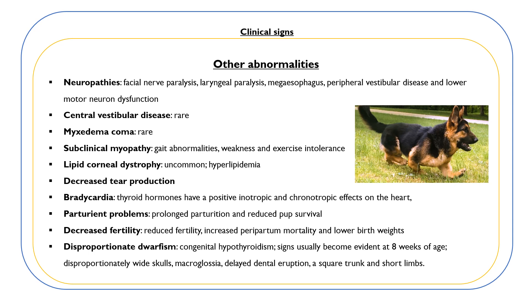Disproportionate dwarfism can be seen in the image here. Dogs with congenital hypothyroidism have disproportionate dwarfism; they appear normal at birth but signs usually become evident by about eight weeks of age. They have disproportionately wide skulls, macroglossia — a bigger than usual tongue — delayed dental eruption, and a square trunk with short limbs.